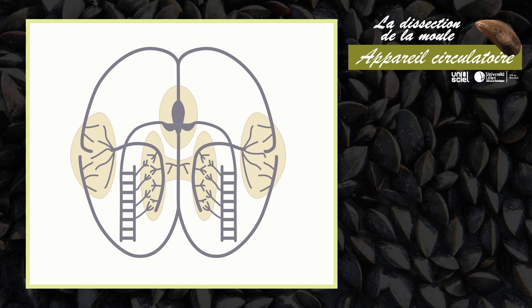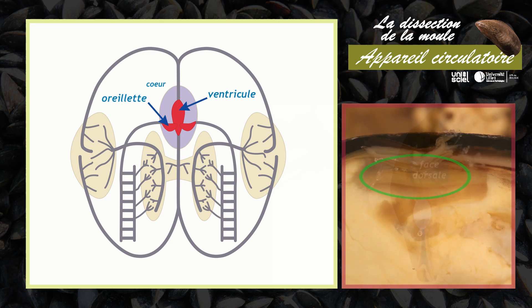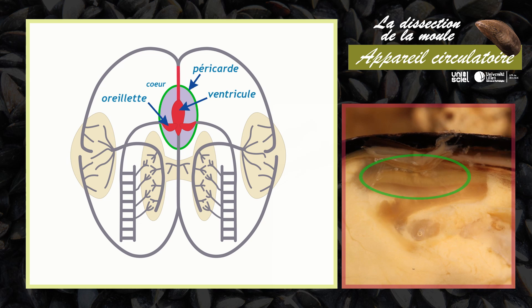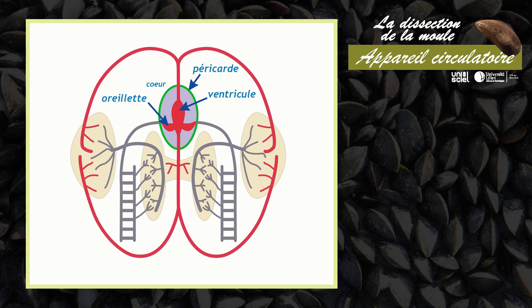Les mollusques bivalves possèdent un système circulatoire ouvert. Le cœur est situé en position dorsale et est formé de deux oreillettes et d'un ventricule, entouré par le péricarde. Le ventricule propulse l'hémolymphe dans une aorte antérieure et une aorte postérieure. Ces deux aortes se ramifient et se déversent dans des lacunes pour irriguer les organes. Puis l'hémolymphe est épurée en passant par les reins, oxygénée en passant dans les branchies, avant de revenir au cœur.